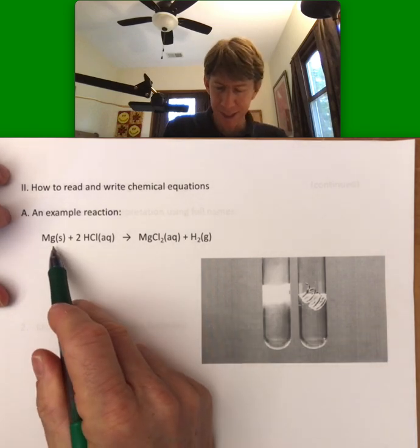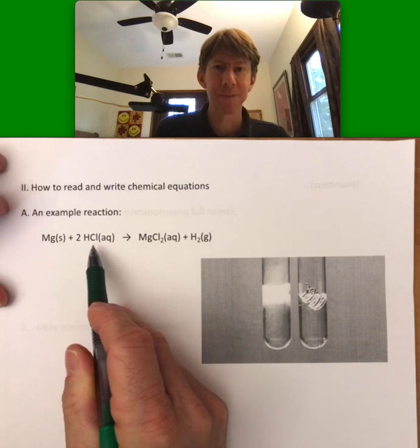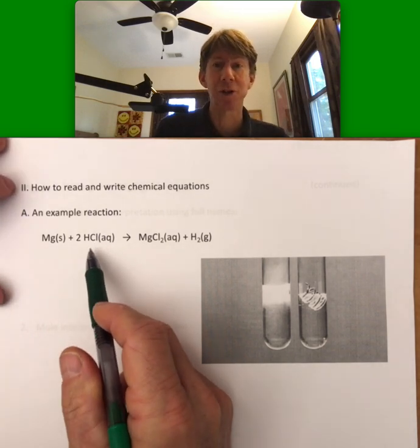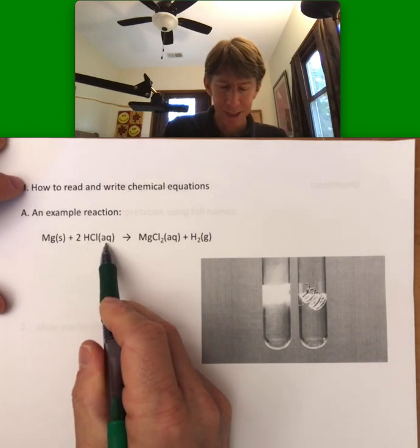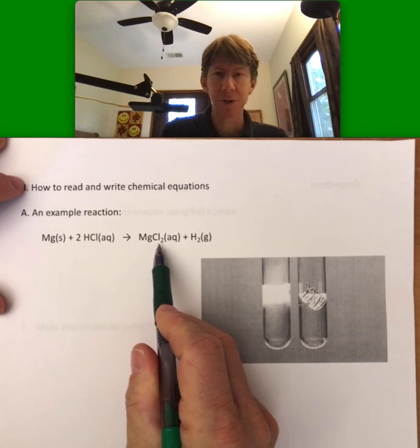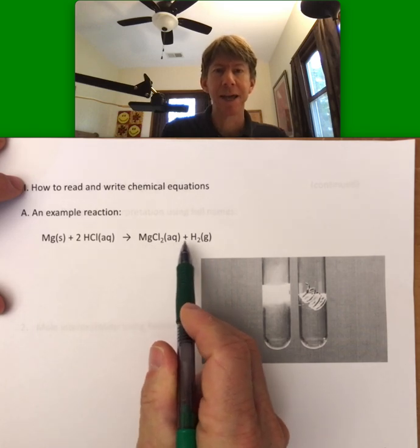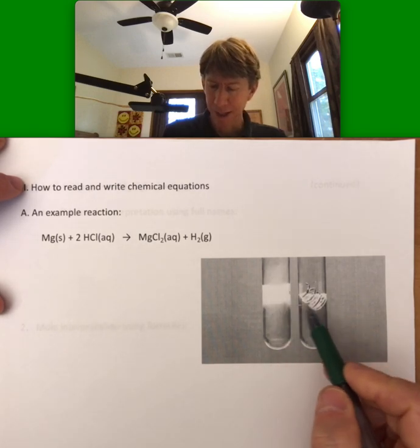We have magnesium solid that was added plus two hydrochloric acid. Hydrochloric acid is a strong acid, one of the seven strong acids that we'll be memorizing. It is in the aqueous phase, and we're forming magnesium chloride aqueous and hydrogen gas. And you can see the hydrogen gas bubbles forming very rapidly here and slowly.